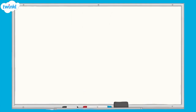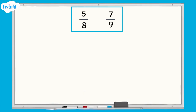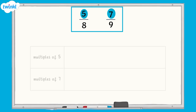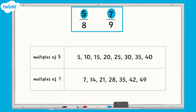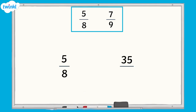Let's take a look at a question where one numerator is not a multiple of the other numerator. Here we have five eighths and seven ninths. Seven is not a multiple of five, so we need to find a common multiple of both five and seven. We can do this by listing out the multiples of both five and seven. By doing this, we can see that thirty-five is a common multiple of both five and seven.